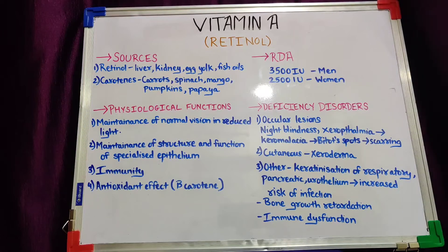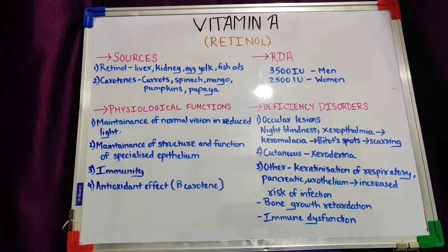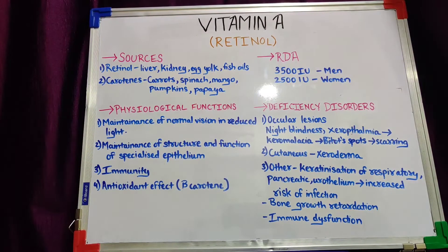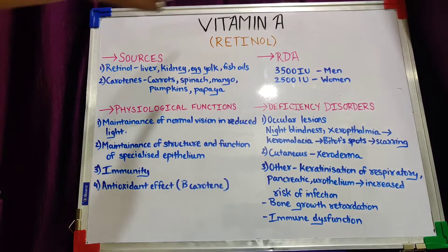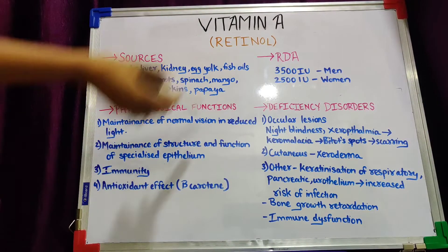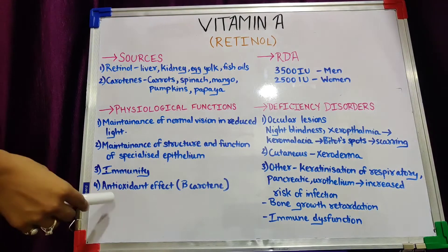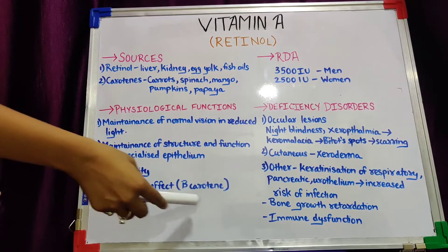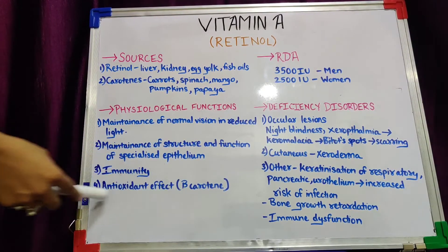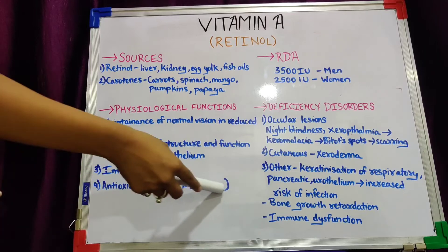The second function is maintenance of structure and function of specialized epithelium. Specialized epithelium is the lining of certain internal organs, like those of the respiratory system and the urinary system. The third function relates to immunity — the ability of the body to fight infections. To build good immunity, we require vitamin A.